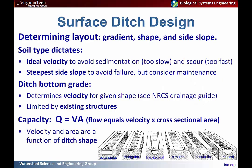You also need to consider the gradient, shape of your ditch, and side slope. The soil type dictates many of these decisions — there's a range of ideal velocities associated with soil type recommended in the drainage guide to avoid sedimentation from water moving too slow, which allows sediment to fall out and reduce the effective volume of your ditch, as well as water moving too fast, which can scour and lead to problems with erosion and sediment export.